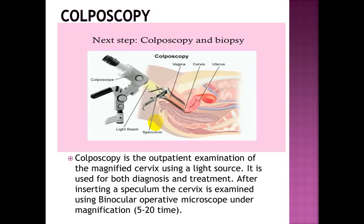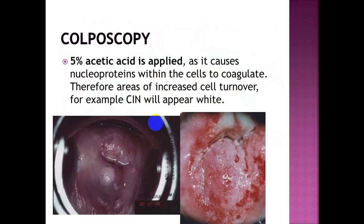Colposcopy is the outpatient examination of the magnified cervix using a light source; it is used for both diagnosis and treatment. After inserting a speculum, the cervix is examined using a binocular operative microscope at magnification of 5 to 20 times. Five percent acetic acid is applied, causing nuclear proteins within the cells to coagulate, so areas of increased cell turnover — for example, CIN — will appear white.